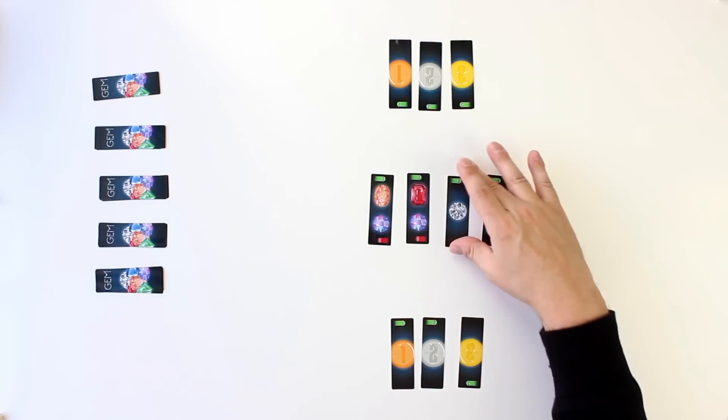The player selects one gem card from those available and places it in front of himself with the red, leveraged side up. It is possible for a bid of 0 to win the auction.